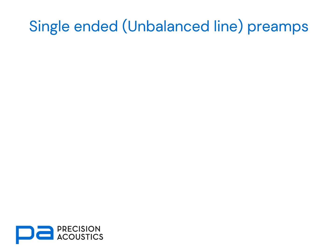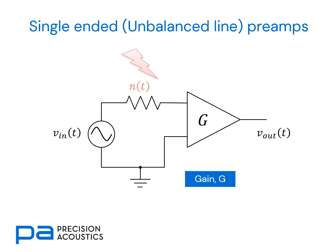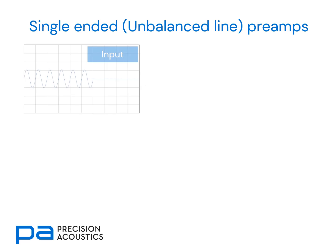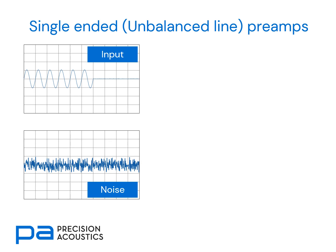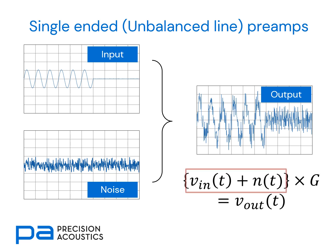Now let's consider what sort of preamplifier we might use. One of the most common options is a single-ended or unbalanced line preamplifier. In this case, we have our voltage source feeding through an impedance into our buffer amplifier, which eventually gives us our output voltage. We may have some gain in the system as well as the impedance buffering. But what happens if this system is subject to an electromagnetic noise signal? We have our input voltage and then there is a noise signal, and both of these are combined and then amplified to give the output. Crucially, we can see that we have amplified both the input voltage and the noise to yield our output.